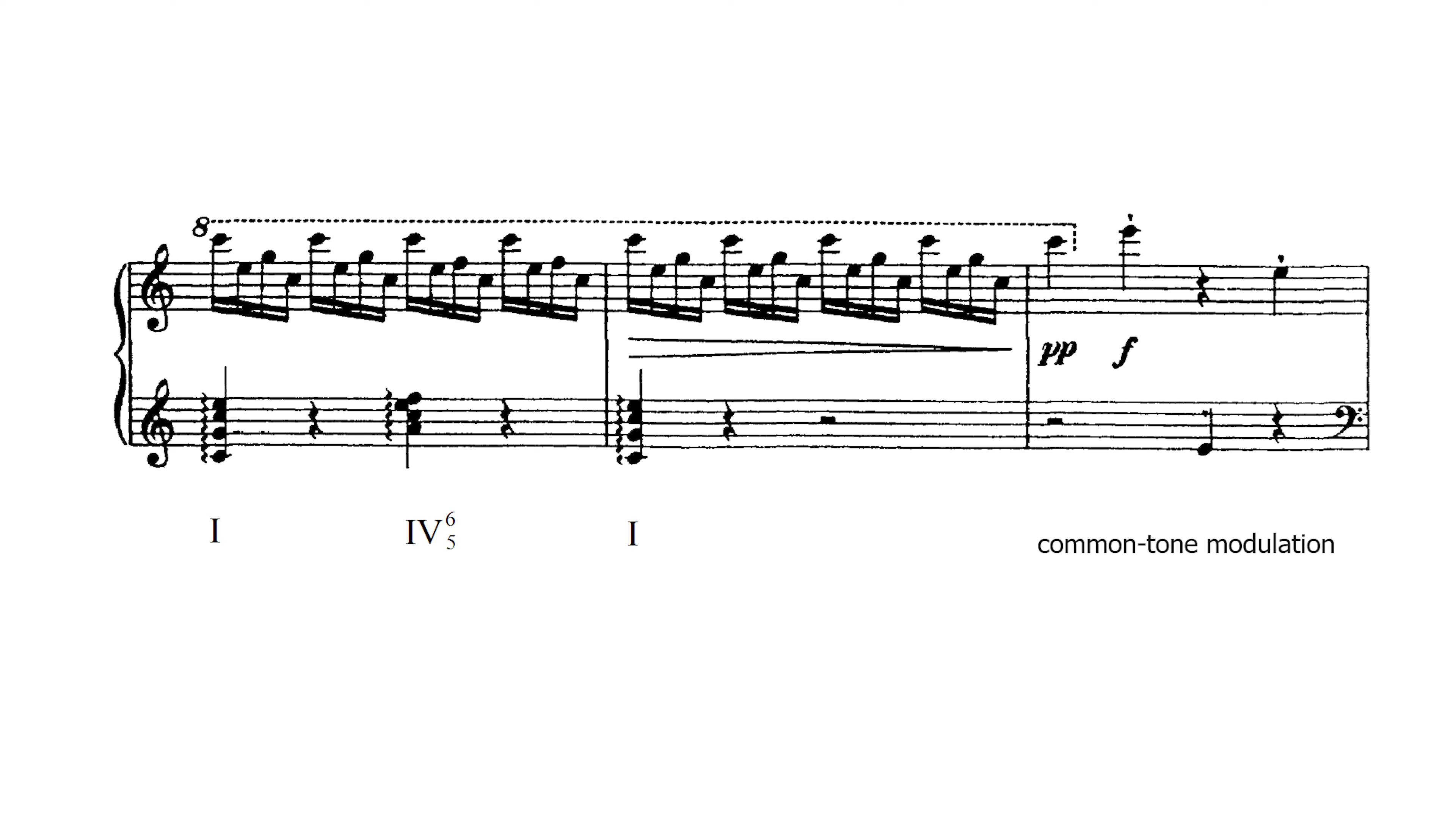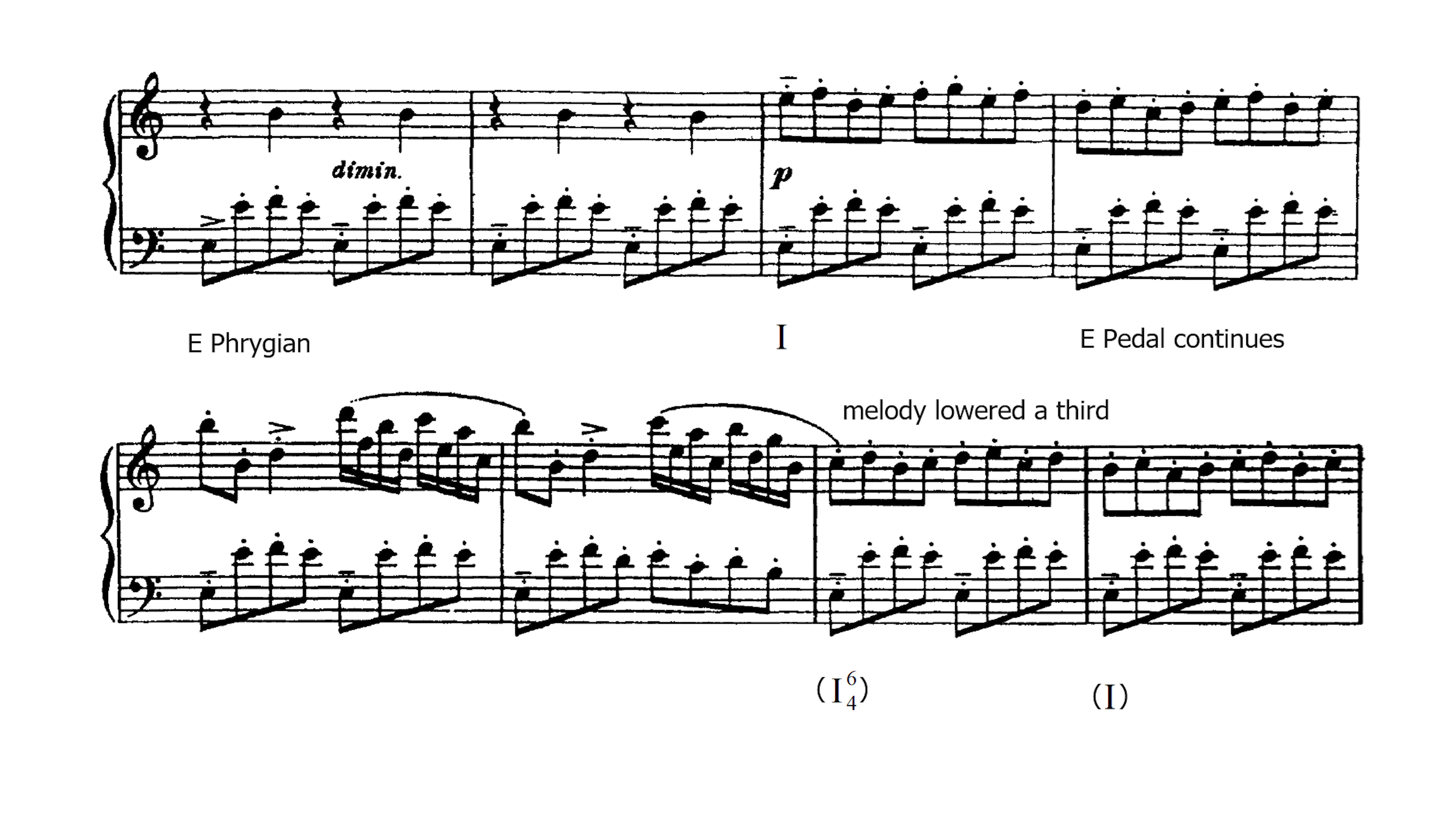The transition into the B section starts with an E note repeated in different registers. This common note becomes the root for the B section, which appears to be in E Phrygian.